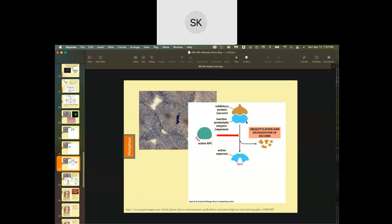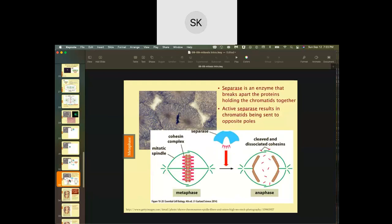And then the separase can become active and it is going to break down these cohesin rings. In this image they're pink instead of green, but you get the idea. This separase is active and it's going to break those down.